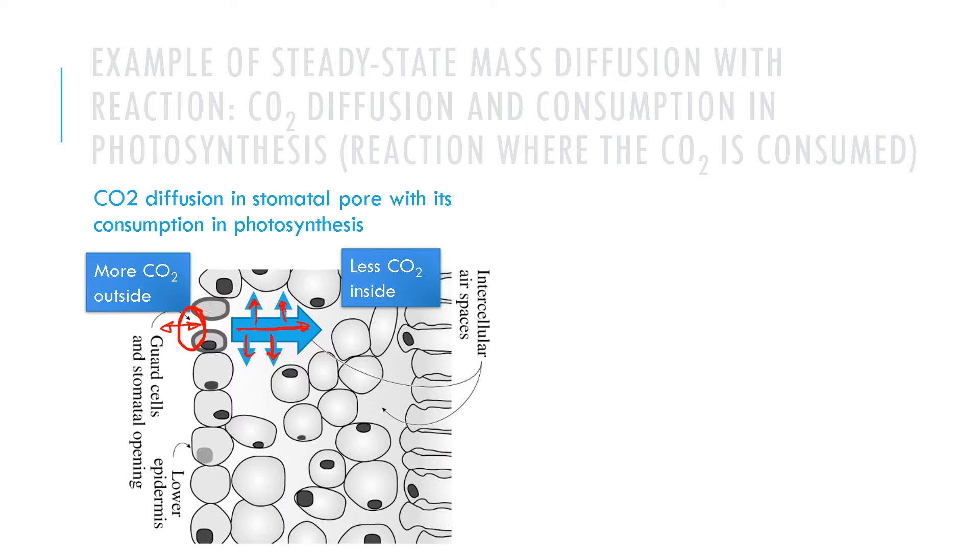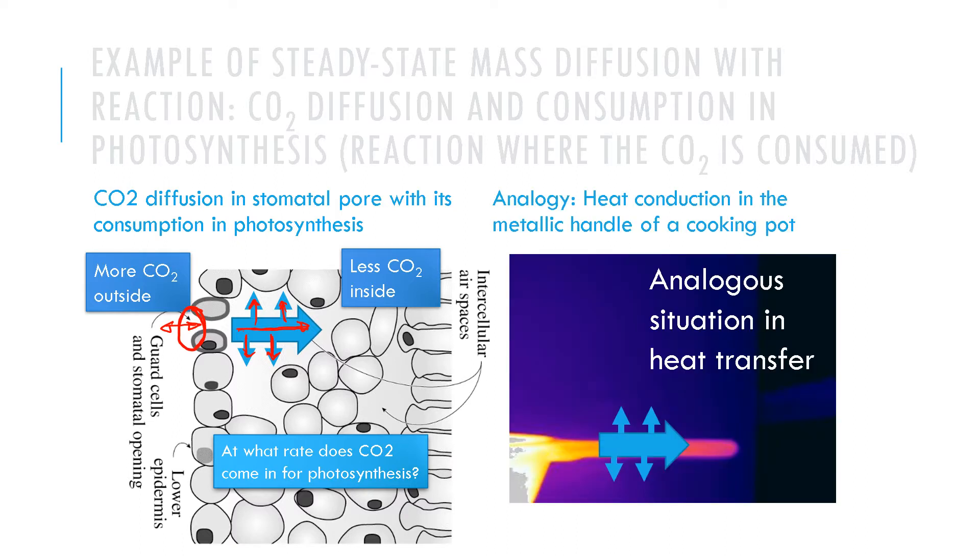In this case consumption, it is analogous to this heat transfer situation of conduction plus loss. Back to the leaf, this rate of photosynthesis is going to depend on the rate at which CO2 comes in, and we know photosynthesis is critical to life. So do you think it is important to know at what rate CO2 diffuses in? We have plenty of good reasons to study this system of diffusion plus reaction, diffusion plus consumption in this case.